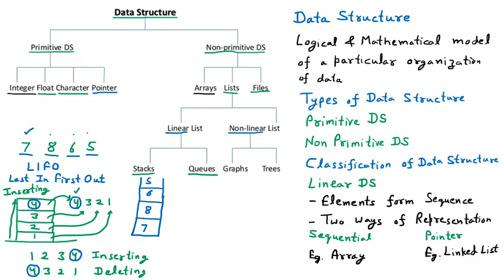So in this bucket we have inserted all the numbers. The insertion order is seven, eight, six, and five. Now the bucket is full. If I have to take out a number, the first number I will take out from the bucket will be five. So five will be taken out first, then six, then eight.